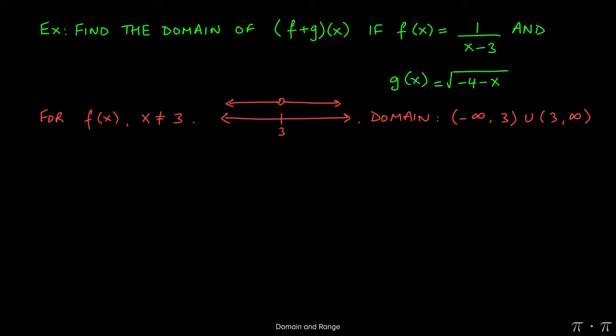Now analyzing g of x, we see that we have a square root of negative 4 minus x. Remember that you cannot take even roots of negative numbers. They could be 0 and they could be positive. The radicands can never, ever, ever be negative.